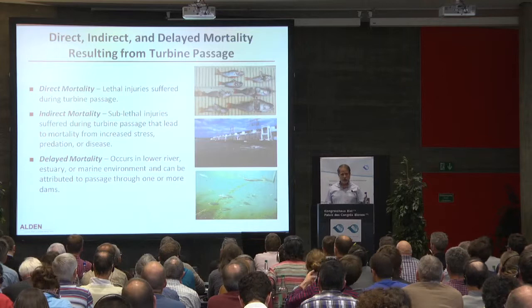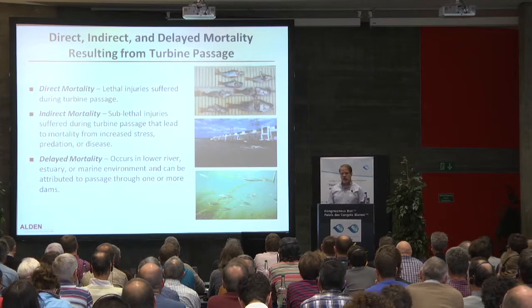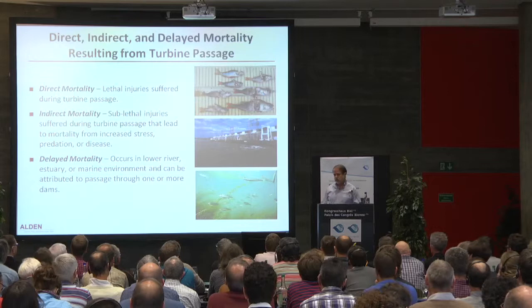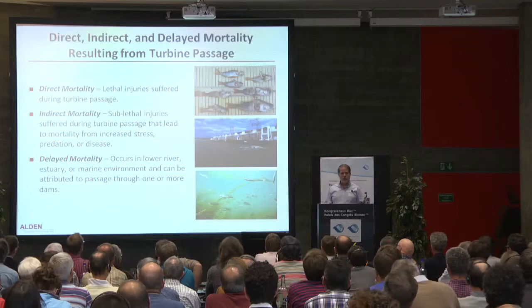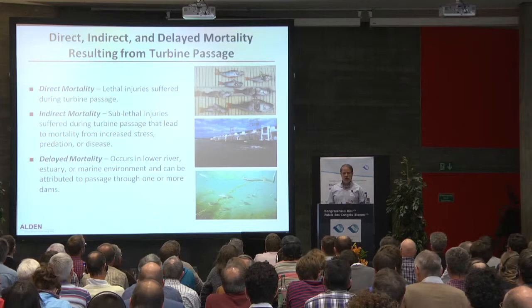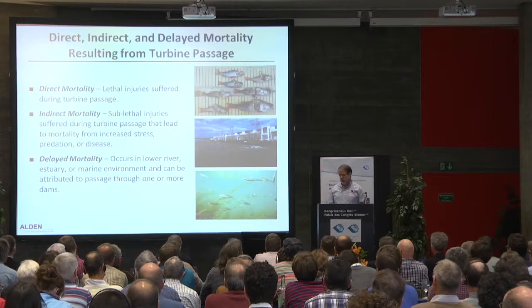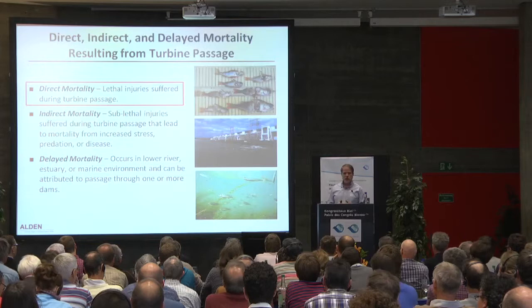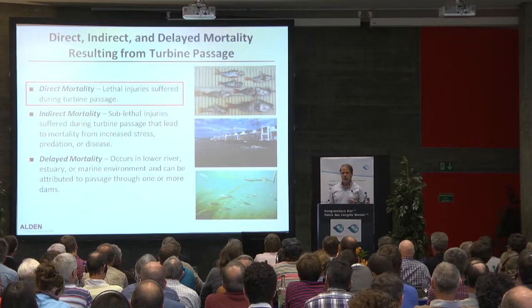There's indirect mortality, which is due to sublethal injuries or possibly disorientation. The fish makes it through, comes out alive, but it may be injured — it may have a lot of scale loss — and consequently it may be more susceptible to predation, disease, and stress. It may not be able to complete its migration. The third is delayed mortality, which has been talked about more recently, particularly in the Columbia River with salmon smolts: when the fish gets to the estuary and the ocean, there is evidence that mortality occurs in the marine environment related to the hydropower experience of passing through several turbines. For my talk, I'm going to focus on direct mortality.